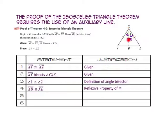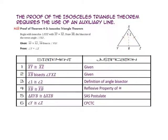By Side-Angle-Side, triangle XYB is congruent to triangle XZB. Finally, we can prove the Isosceles Triangle Theorem: because we have two congruent legs, the angles opposite those sides — angle Y and angle Z — are congruent by CPCTC, corresponding parts of congruent triangles are congruent.